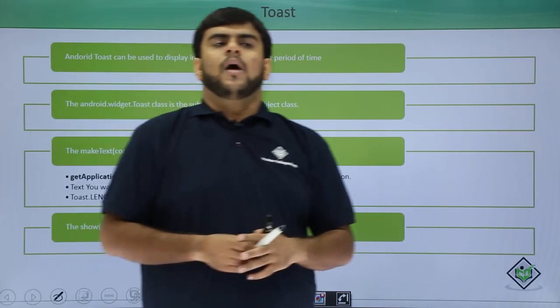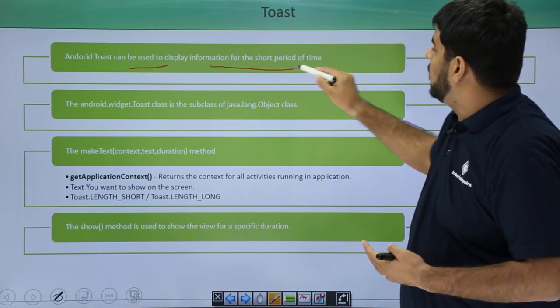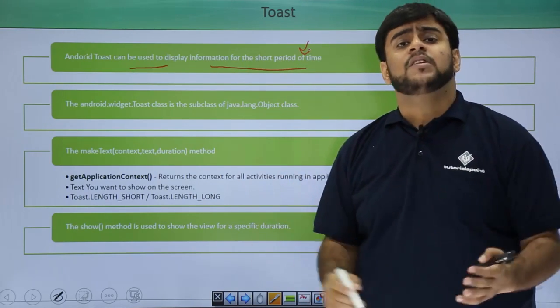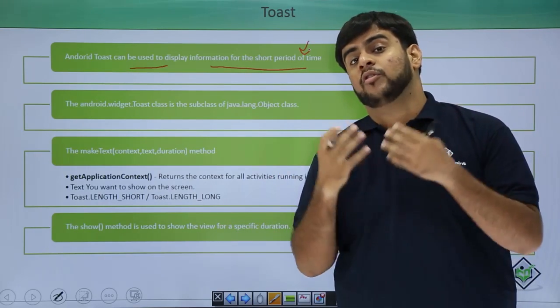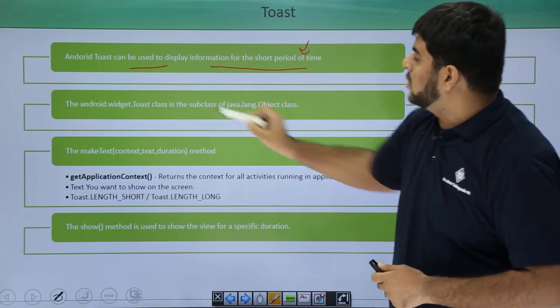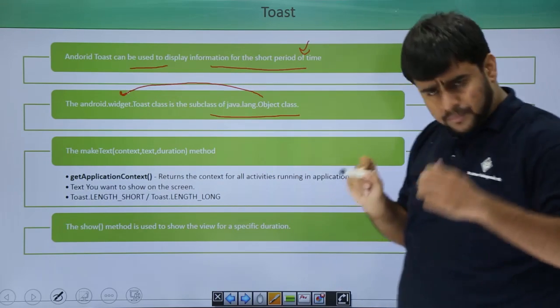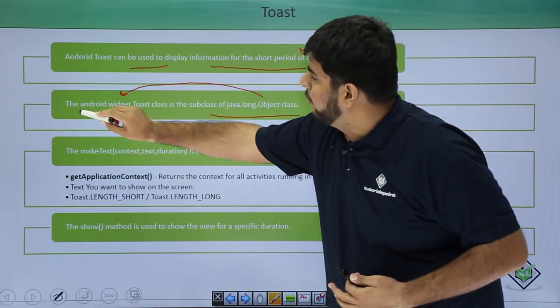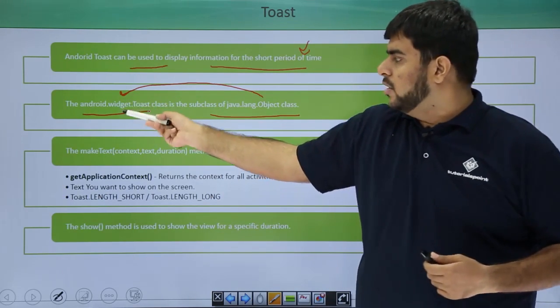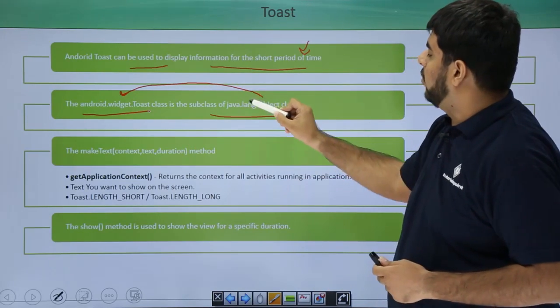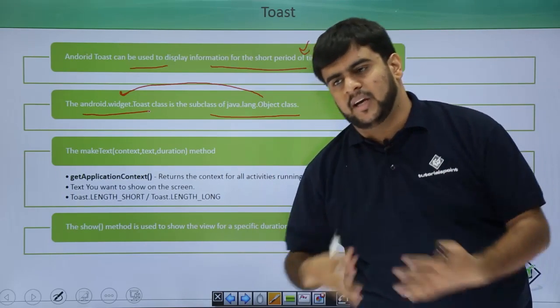A Toast is small information shown to the user to display information for some short period of time. Obviously, the time can be managed in our own ways. As a developer, you can give for what duration you want to show the Toast. The Toast is extended from the java.lang.object class and the Toast class is coming from android.widget.toast. If you are using Toast, you need to make sure that you are importing this particular package. This package is derived from the java.lang.object class.